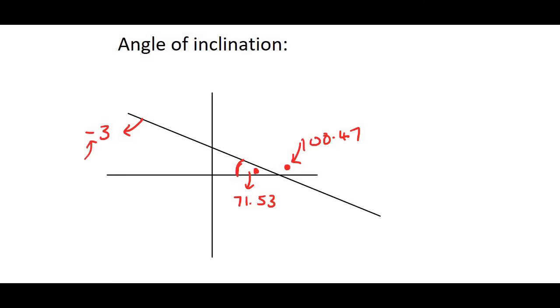Something I haven't mentioned yet. Angle of inclination is always, and I mean always, the angle on the right. So it's always the one on the right-hand side. So the angle of inclination of this line is 108.47.